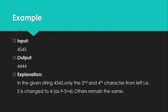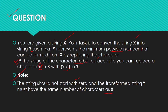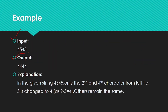Let's see the example. This is your input and this is your output. One last thing: you have to use string format, not integer. String X and string Y — user inputs must be string and output will also be in string format. So the input is 4545 and you will get the output 4444.